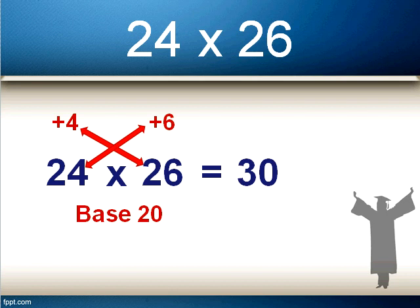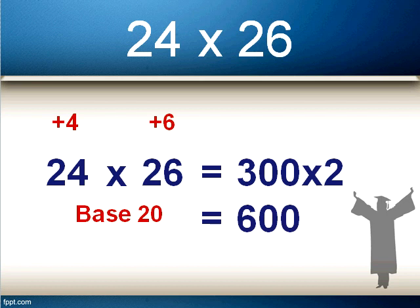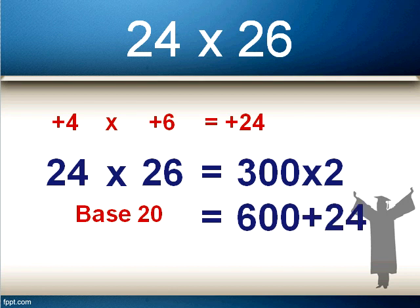If we were using base 10 we'd think of 30 as 300, but since base 20 is 2 times 10, we think of this as 300 times 2, which is 600. You may want to pause here to get the difference: base 10 effectively adds a zero and multiplies by 1, while base 20 adds a zero but multiplies by 2. The second step is to multiply the top two red numbers: 4 times 6 is 24.